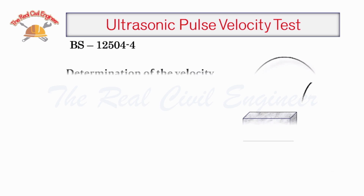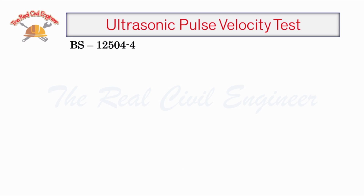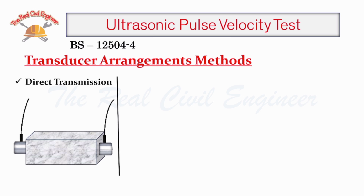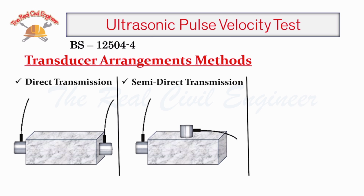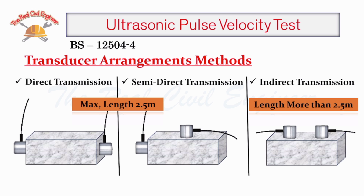The instrument used in this test is the ultrasonic pulse velocity tester. Transducer arrangement methods: direct transmission, semi-direct transmission, and indirect transmission. Direct transmission and semi-direct transmission have a maximum length of 2.5 metres; indirect transmission is used for lengths more than 2.5 metres.